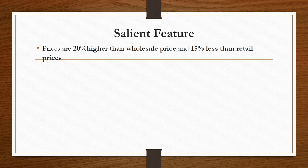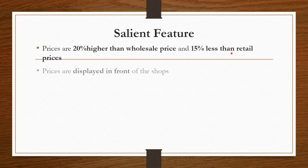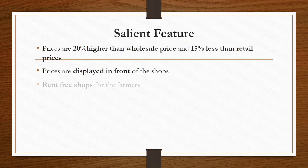The salient features of farmers markets are: first, prices prevailing in the farmers market are 20% higher than the wholesale price and 15% less than retail prices. So a producer is happy receiving 20% more than the wholesale price, and a consumer is happy paying 15% less than the retail price. The prices of produce are displayed in front of the shops so there is no deviation in prices — before every shop, the price of the particular produce being sold is displayed.